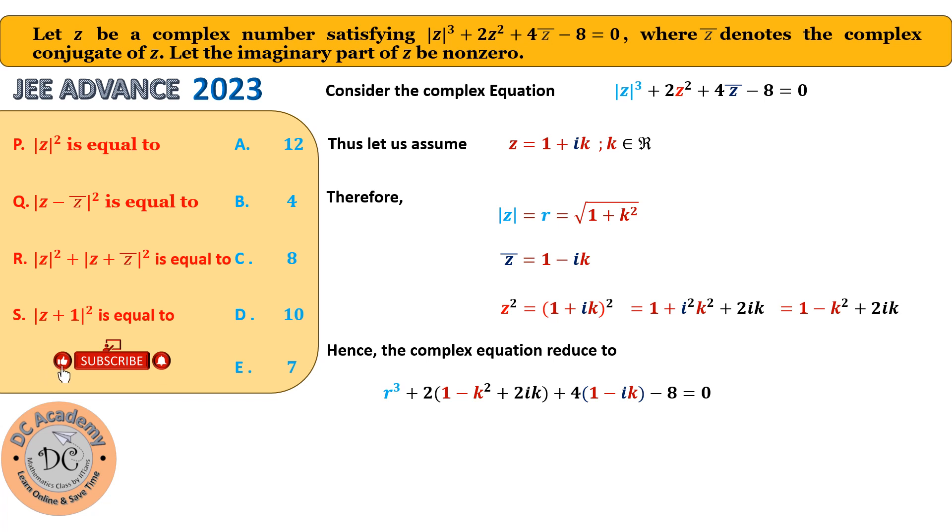Now notice, if I multiply that 2 and 4 in the respective places and rewrite, we can easily say that that 4ik term will be cancelled out and the given complex equation will become, in a very simple form, R³ - 2k² - 2 = 0. And hence, R³ will be 2k² + 2, or 2(k² + 1).